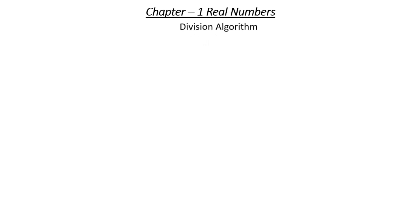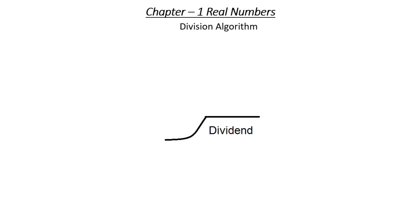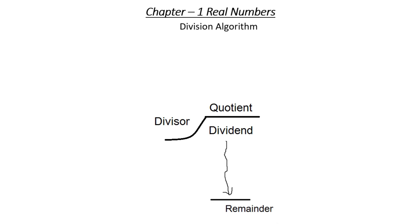The first concept we are discussing here is the division algorithm. There is particular terminology related to division: the dividend is the number which is to be divided, the divisor is the number by which we divide the dividend, the quotient is the final result, and the remainder is the undivided part. We will use this algorithm to find beautiful results in mathematics and also find the HCF of two numbers using this division lemma and division algorithm.